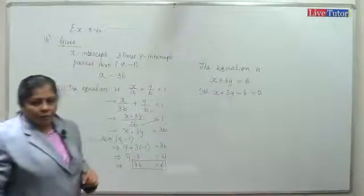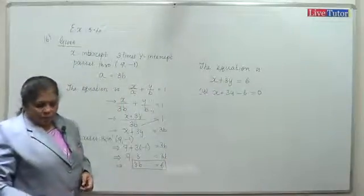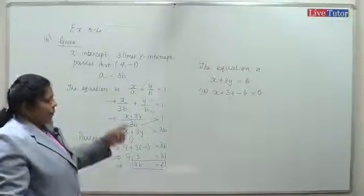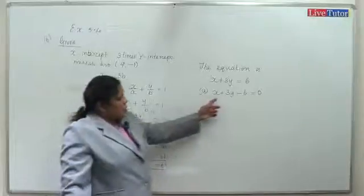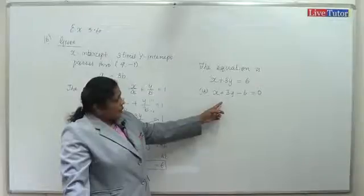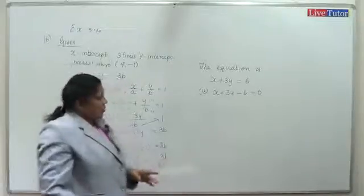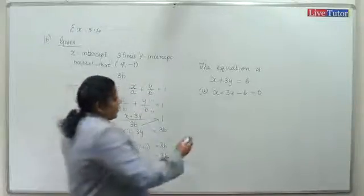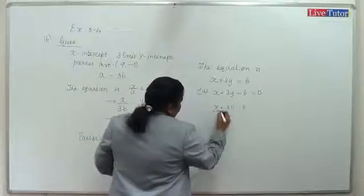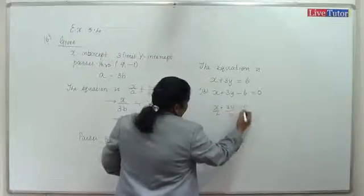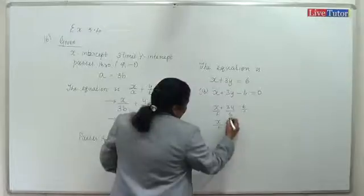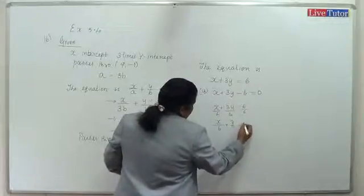Let's check: dividing the equation x plus 3y equals 6 by 6, we get x by 6 plus y by 2 equal to 1. So the x-intercept is 6 and y-intercept is 2.